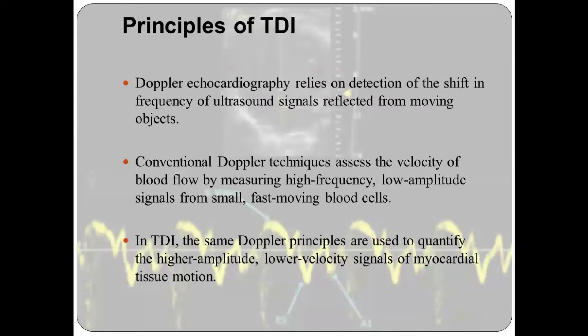The principles of tissue Doppler imaging: Doppler echocardiography relies on detection of shift in the frequency of ultrasound signals reflected from moving objects. Conventional Doppler technique assesses the velocity of blood flow by measuring high-frequency, low-amplitude signals from fast-moving blood cells. In tissue Doppler imaging, the same Doppler principles are used to quantify higher-amplitude, lower-velocity signals from the myocardial tissue motion.